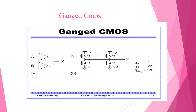Here we have ganged CMOS. Ganged CMOS means we have one more structure — it is ganged. Here we have two inverters connected together, that is why it is called ganged CMOS. Simple CMOS means it is having a simple inverter structure. Ganged CMOS means we have two more structures — two NOT gates or two inverters connected in series or parallel.